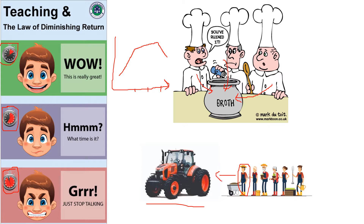Imagine we have one tractor and no workers. Adding the first worker might allow them to harvest 10 bales of hay. Adding a second worker gives a really good benefit — one gathers hay while the other loads it — so output goes up to 22, meaning that worker added 12. A third worker takes output to 30. But by the time we try to introduce the sixth worker, they're all squabbling to get on the tractor and output has gone back down to 15 — there are negative returns from that extra worker.